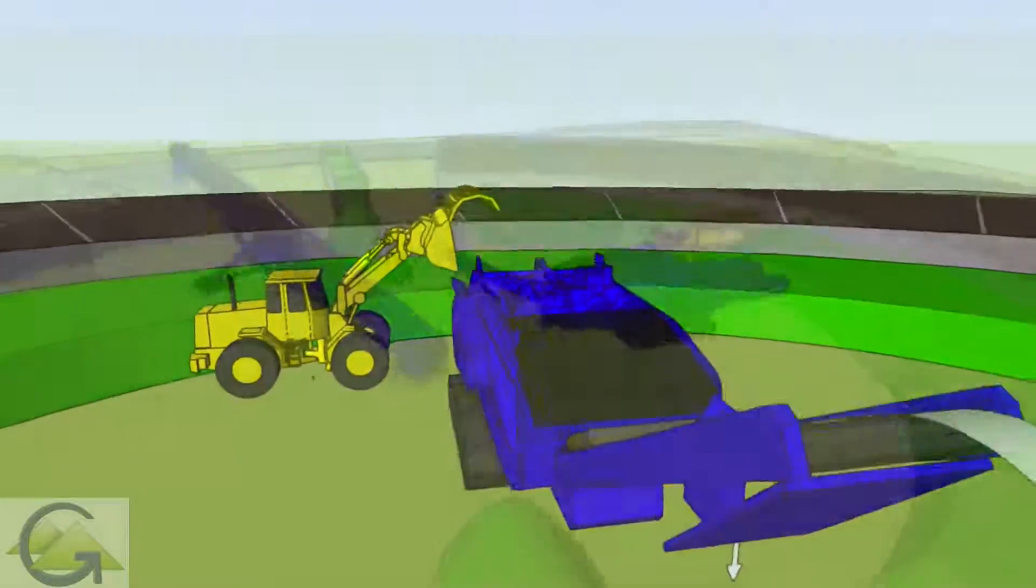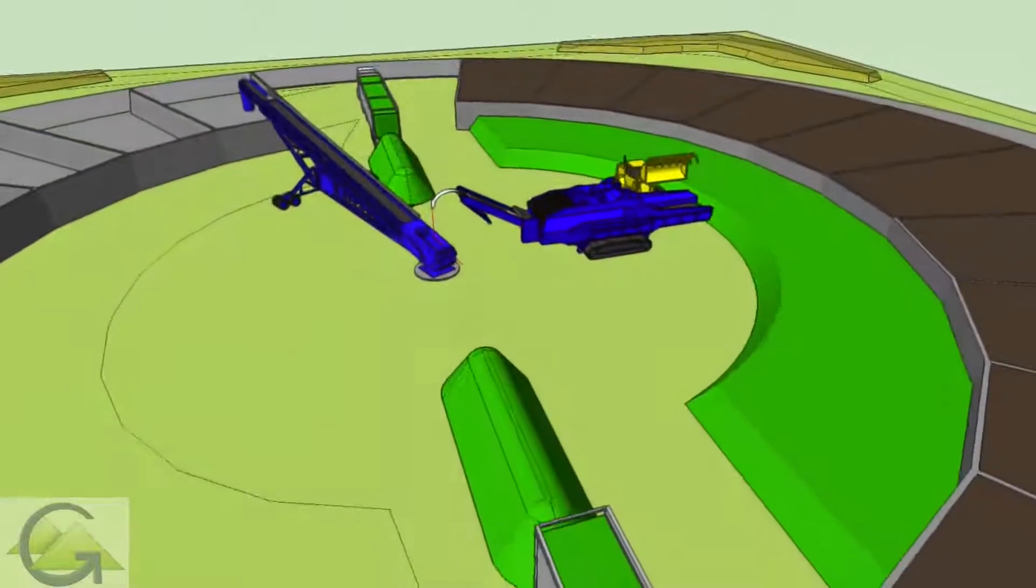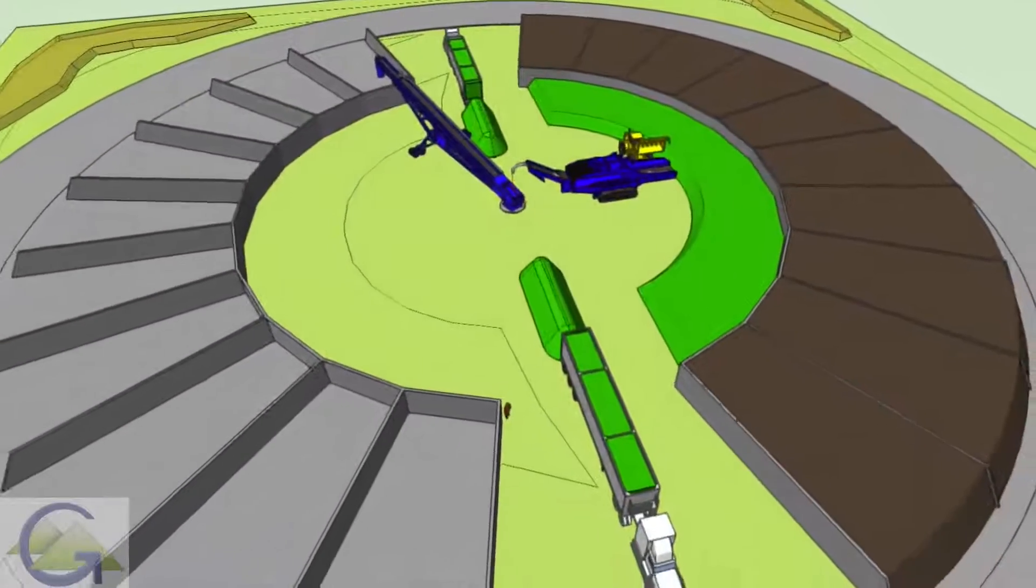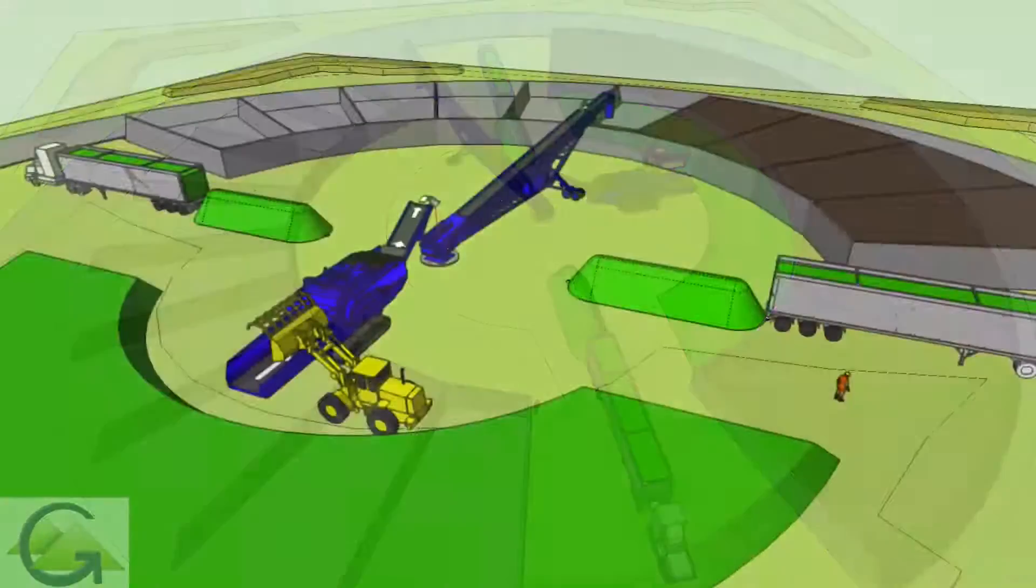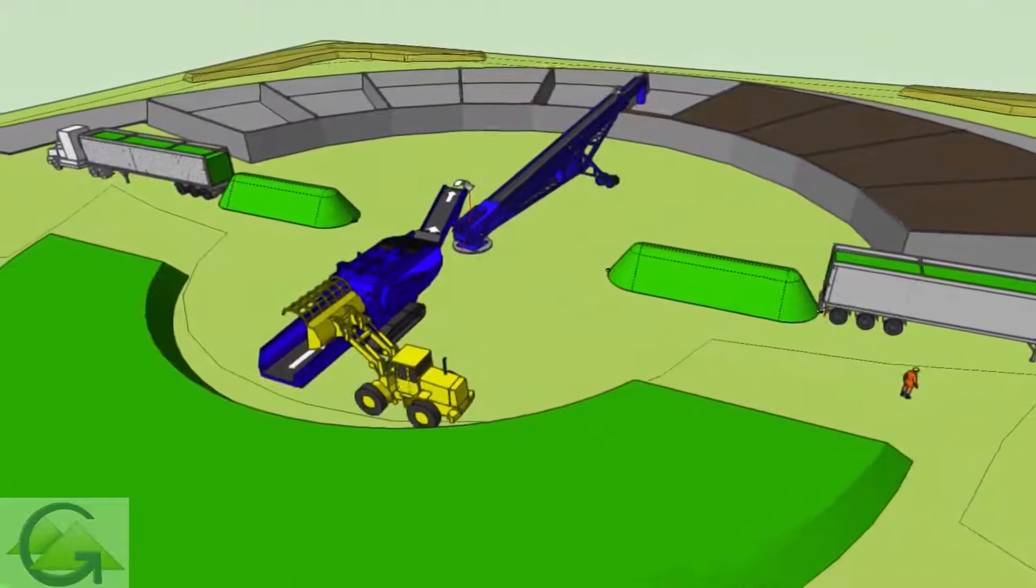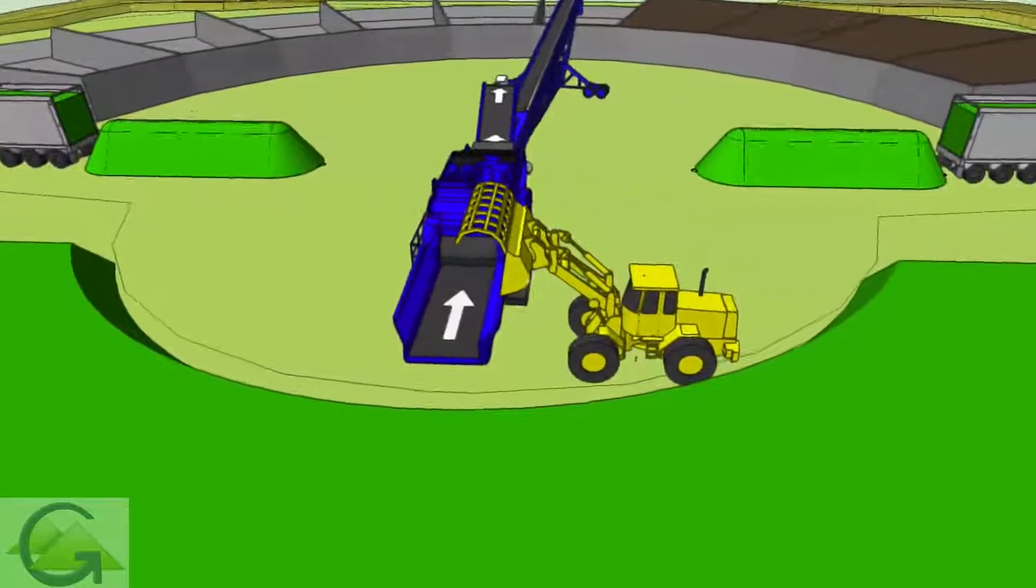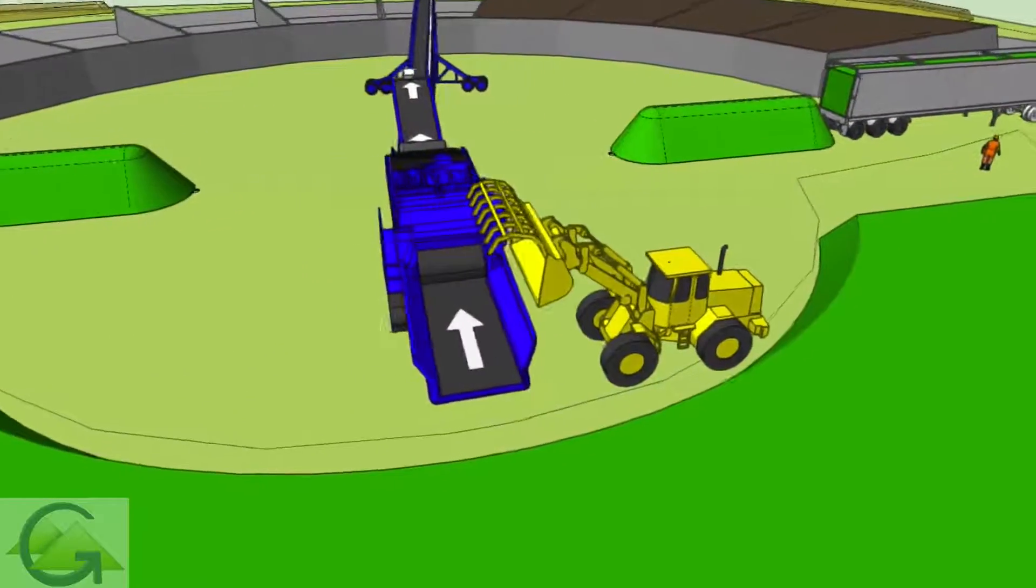The circular receiving area reduces the travel distance to the grinder and has approximately 10,000 square feet of storage area. The loader operator's main job is to feed the high capacity horizontal grinder and make sure the right proportion of incoming wastes are ground together.